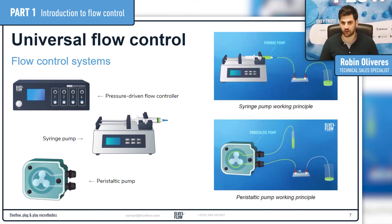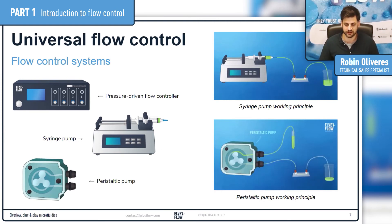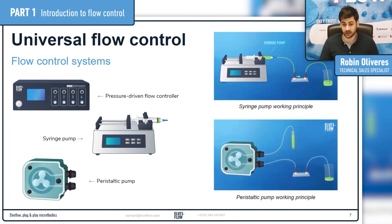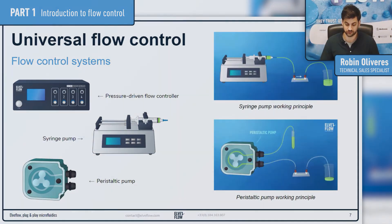On the other hand, a peristaltic pump uses the mechanical action of a rotary element on a flexible tubing to push the liquid from the inlet to the outlet. But the main hassle with this technique is that it leads to an even more pulsatile flow than a syringe pump.